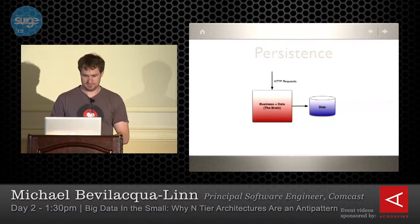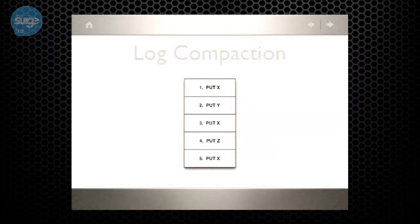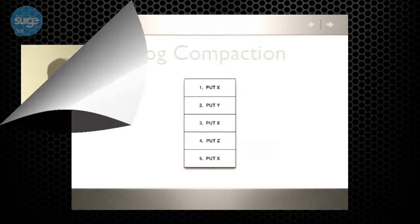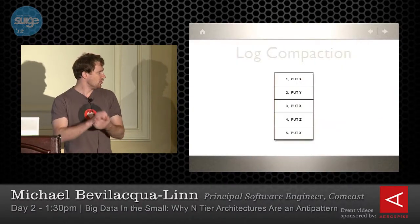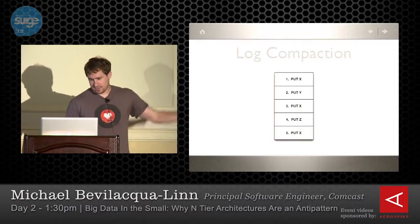If we want to persist our data, for some problems it is enough to create a log — a transaction log, like a database would do — of the requests coming into the system. For us, those requests would be something like 'we've got a new video.' It's enough to just create a log of those requests. They're sort of business-centric things — a new video was added, a new movie was added, a new TV series. You create a write-ahead log that just has that in it. Now it's on disk — durability is good.